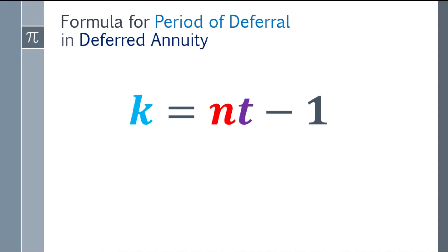What is the formula we'll use to find the period of deferral? For deferred annuity, we have k equals nt minus 1. So n is the compounding frequency, t is the time. Then subtract 1 from the answer. That's how we find the period of deferral.